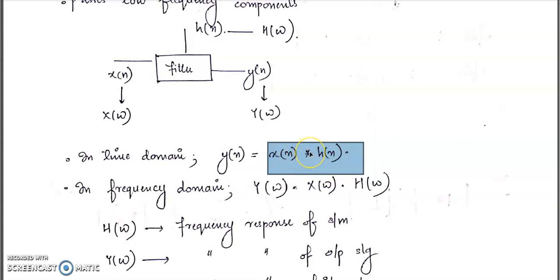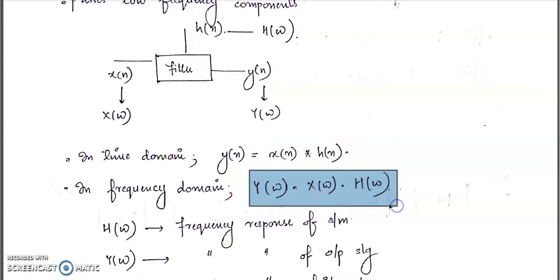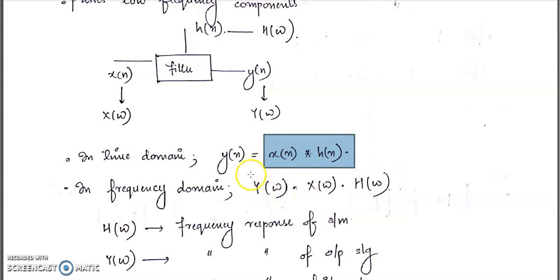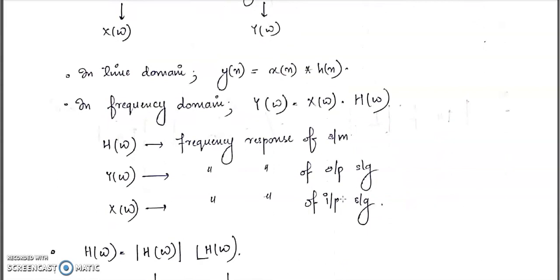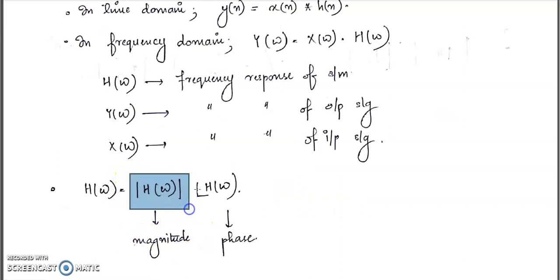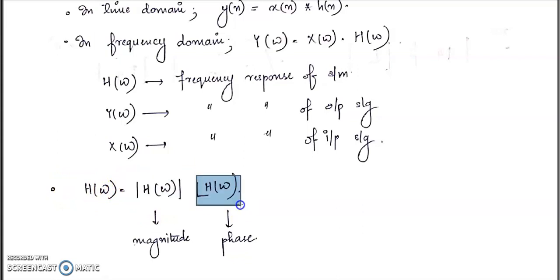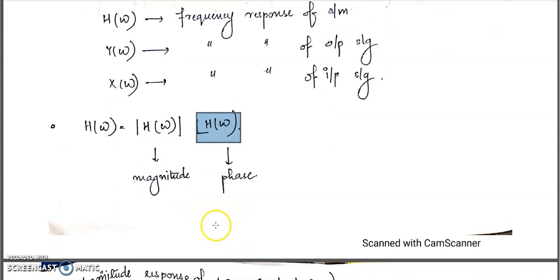Convolution in the time domain is equivalent to multiplication in the frequency domain. In the frequency domain, we can represent Y(ω) = X(ω) · H(ω), where H(ω) is the frequency response of the system. H(ω) can be represented in magnitude and phase: the magnitude of H(ω) and the angle of H(ω).